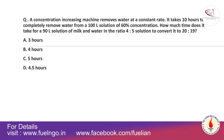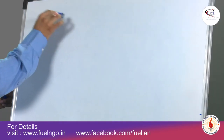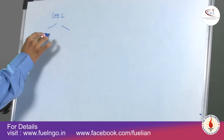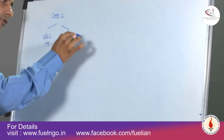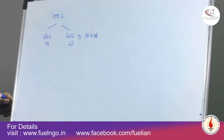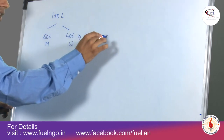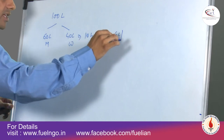The next question says: a concentration increasing machine removes water at a constant rate. Since concentration is increasing, the purity level increases at every point of time. It takes 10 hours to completely remove water from a 100 litre solution of 60% concentration. So 60 litres is milk, 40 litres is water, and to remove 40 litres takes 10 hours — meaning the water removal rate is 4 litres per hour.